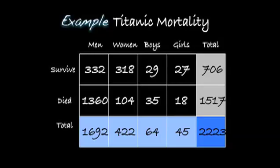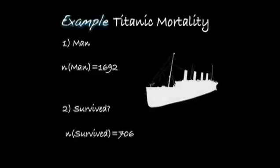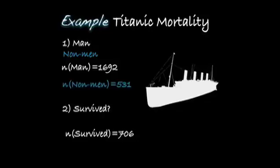The Titanic mortality table. We're going to use this table to answer probability questions. The Titanic mortality. The event of being a man, there is 1,692 men aboard the Titanic. The complement of men is non-men. This includes the women, the boys, and the girls. There is 531 non-men aboard the Titanic. Notice that if I add the number of men 1,692 with the number of non-men 531, I'll get 2,223 passengers.